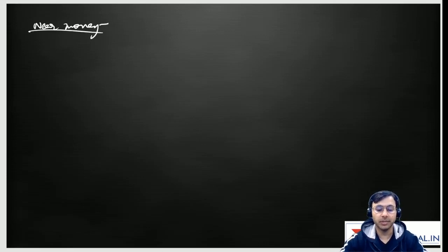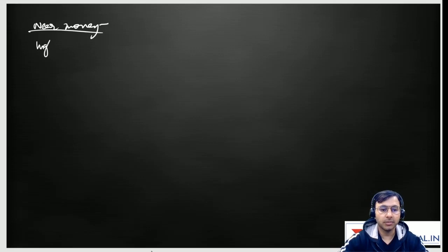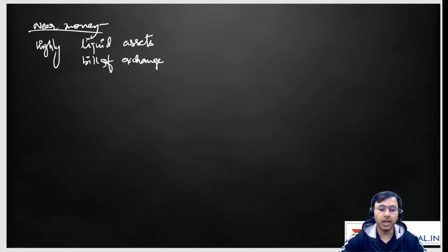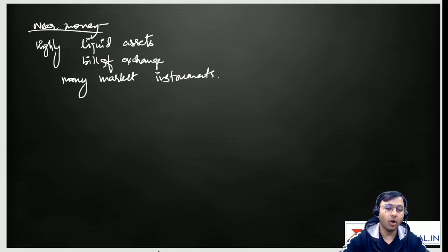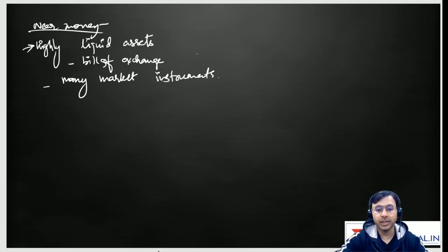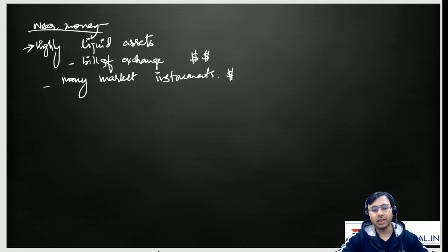The next term is near money. These are highly liquid assets which are not cash right now but can be easily converted into cash. Examples include bills of exchange, savings accounts, marketable securities, and various money market instruments. If you hold these instruments you can almost certainly convert them into cash immediately, within 30 days. At the same time they provide certain returns while maintaining the nature of being highly liquid — that's why they're very attractive. This is called near money.